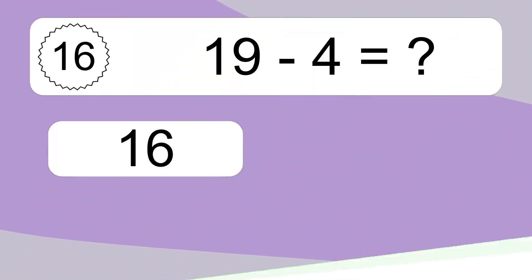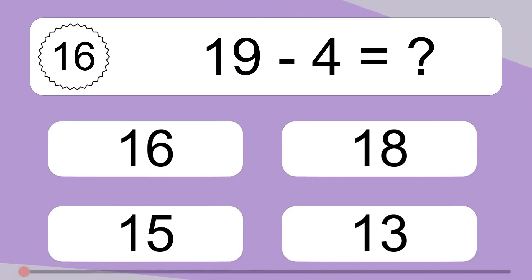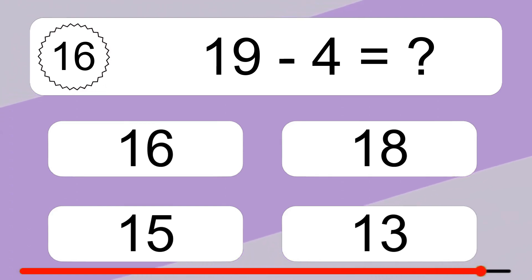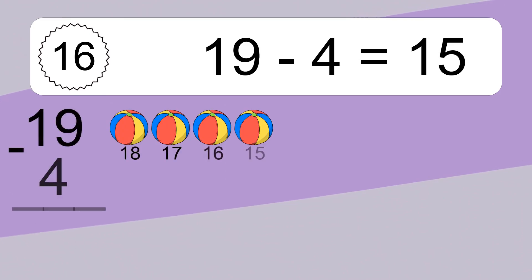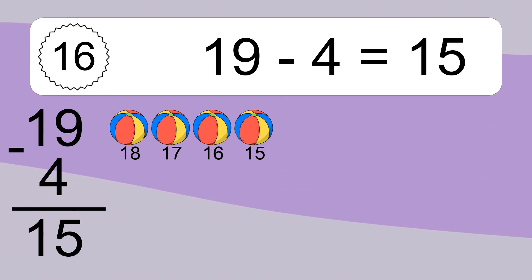19 minus 4 equals what? 19 minus 4 equals 15. Let's count it: 18, 17, 16, 15.